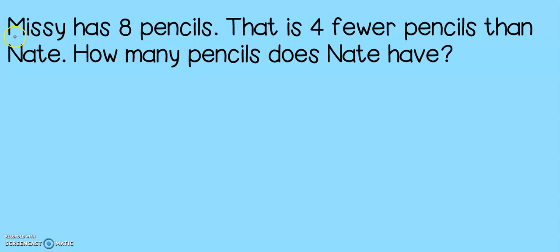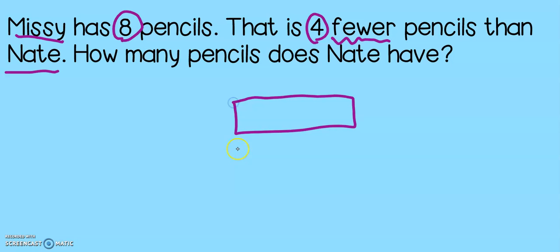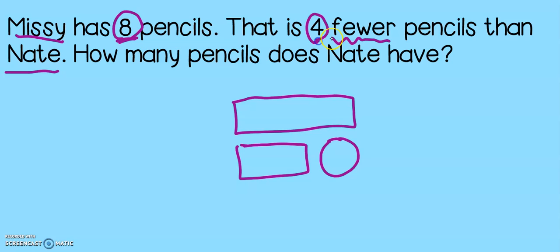Let's start with the first problem. Missy has eight pencils. That is four fewer pencils than Nate. How many pencils does Nate have? Since I know I'm doing comparison bars, let's get those drawn right away. In this problem we have Missy and we have Nate. It says that Missy has eight pencils — that is four fewer pencils than Nate.